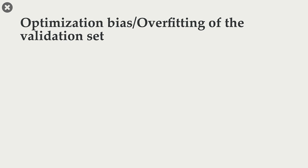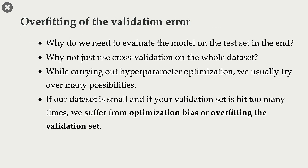Let's talk about optimization bias or overfitting of the validation set. You might be wondering why we need to evaluate the model on the test set in the end. Why do we split the data into train split and test split at the beginning, carry out cross-validation only on the train split, and finally evaluate the best model on the test split?